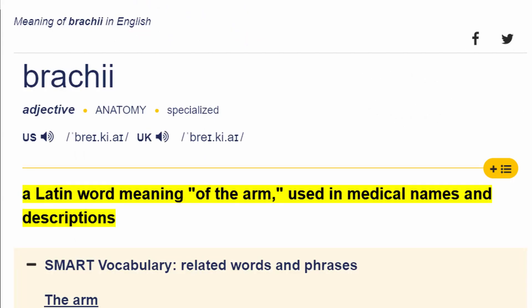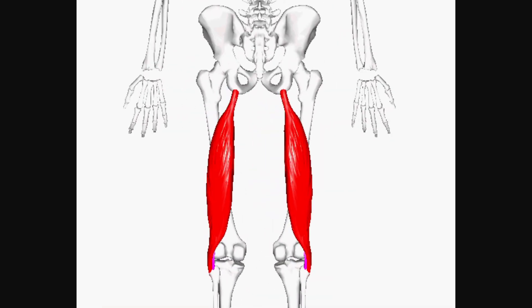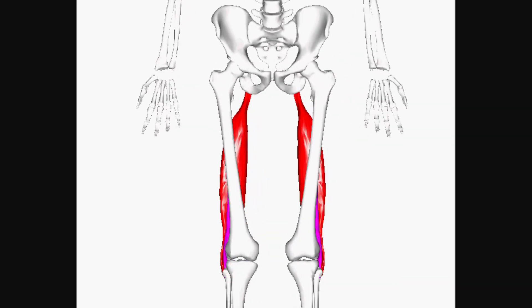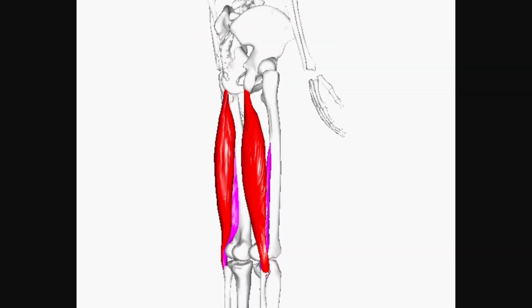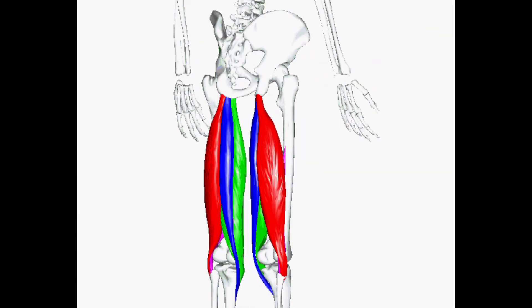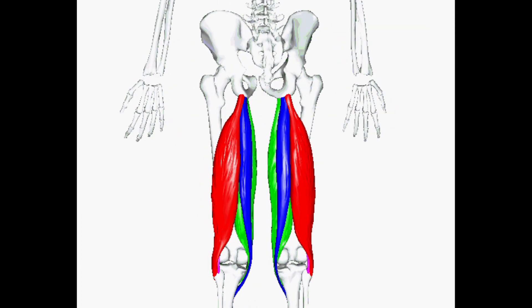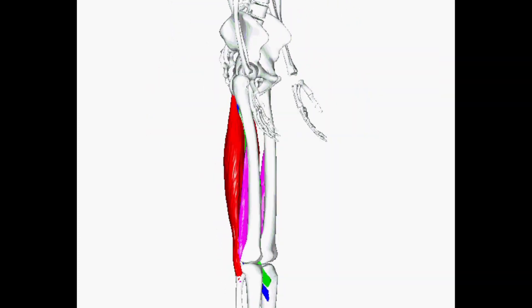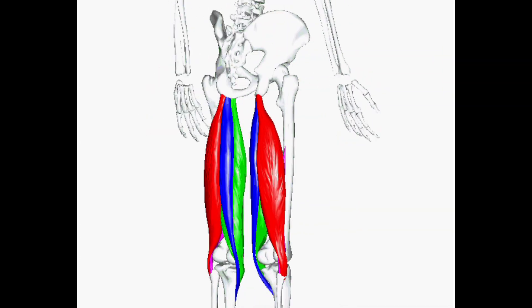The anatomically correct term is biceps brachii. Brachii is Latin for of the arm. This is important because we also have the biceps femoris muscle — another two-headed muscle, but it is located in the posterior part of the thigh in the group of muscles known as the hamstrings. Unfortunately, the biceps femoris doesn't get all the attention that the biceps brachii does, so usually biceps just refers to the arms.